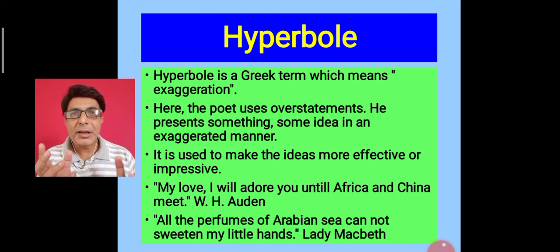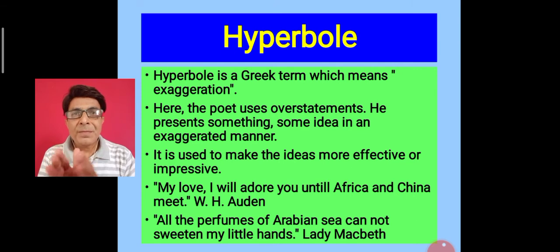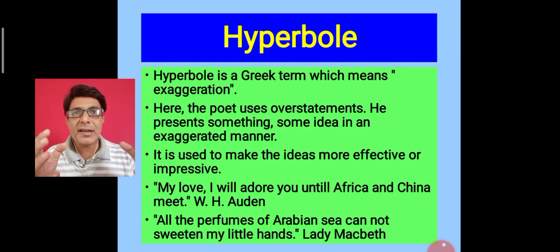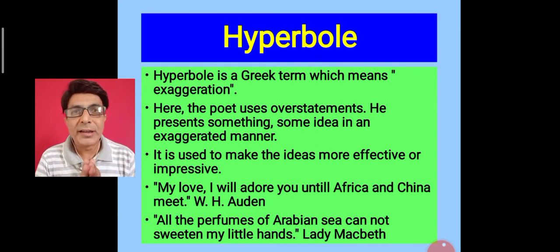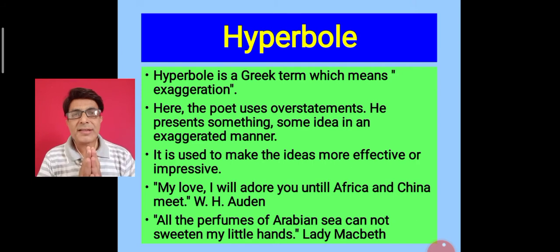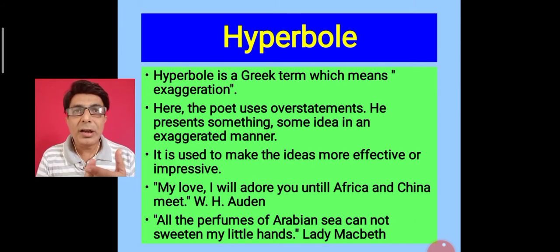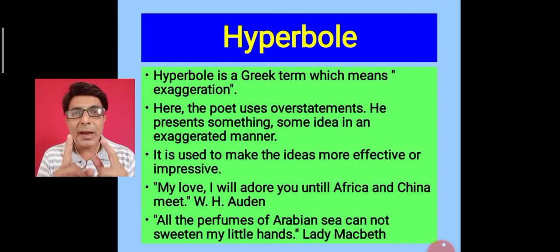Now we know that Africa and China are countries located at distant places and they can never meet geographically. But the poet actually wants to suggest that he will love the lady forever.